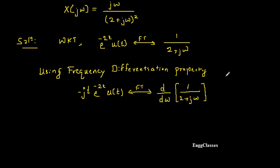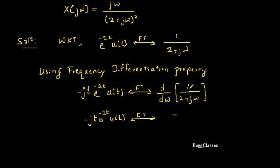Now I take the differentiation of 1/(2 + jω) using the quotient rule. Keep the denominator as it is, differentiation of the numerator (a constant) is 0, minus keep the numerator as it is and differentiate the denominator — 2 is constant so 0, and differentiation of jω with respect to ω is j — divided by the denominator squared. This concept comes from mathematics.